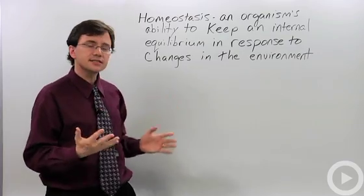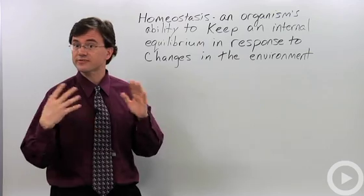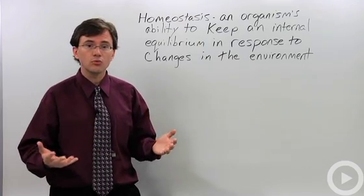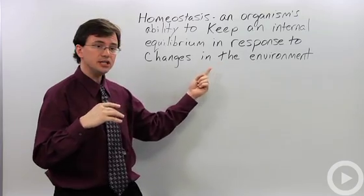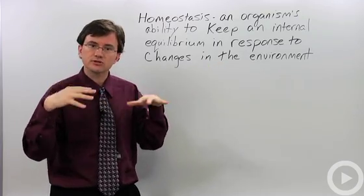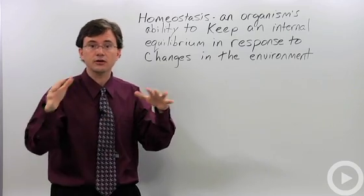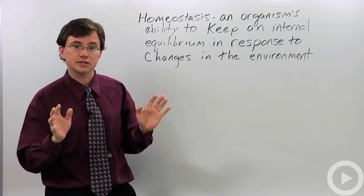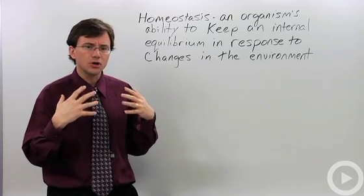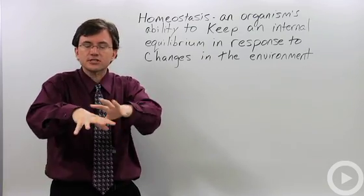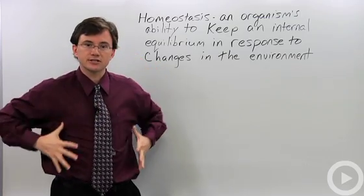One of the easiest examples of homeostasis is our response to changes in environmental temperature. As mammals, our bodies are always trying to keep our internal temperature around 98.6 degrees Fahrenheit, which is roughly 37 to 38 degrees Celsius. So as I get cold, what does my body automatically do? Well, my fingers and ears tend to lose heat a lot easier than, say, my chest.